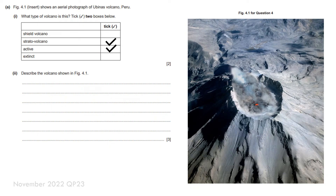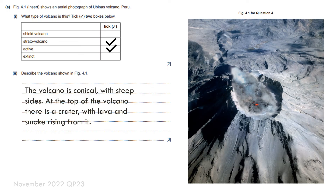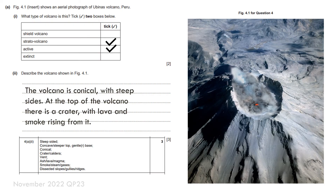Going back to this question, remember the number of marks indicates the number of unique points you need to make, because it's a describe question. So you could write something like: 'The volcano is conical with steep sides. At the top of the volcano there is a crater with lava and smoke rising from it.' If we check the mark scheme, you can see I've gone above and beyond, but I've made sure there are enough points to get all three marks.